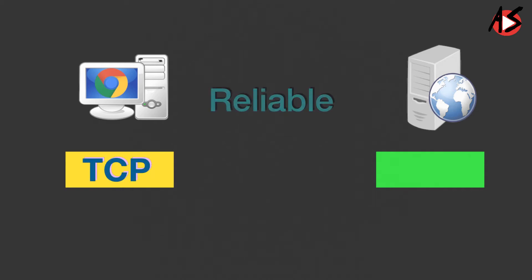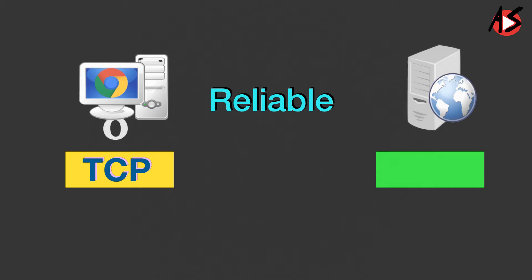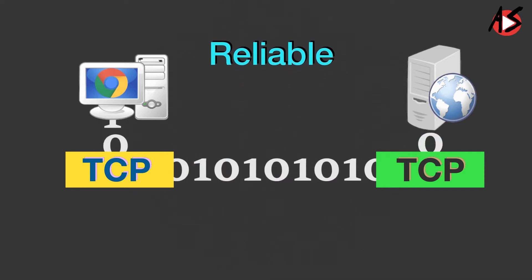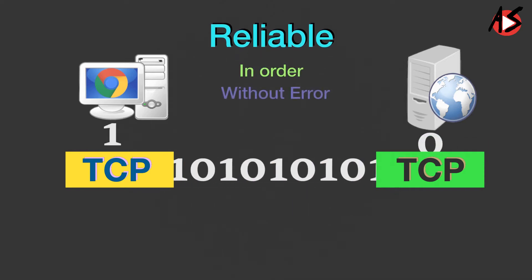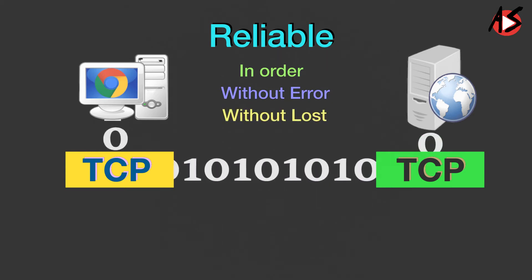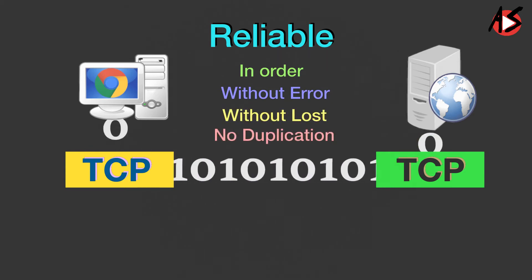TCP is a reliable transport layer protocol. This means that a sender application program that delivers a stream of data to TCP relies on TCP to deliver the entire stream to the receiver application program in order, without error, and without any part lost or duplicated.